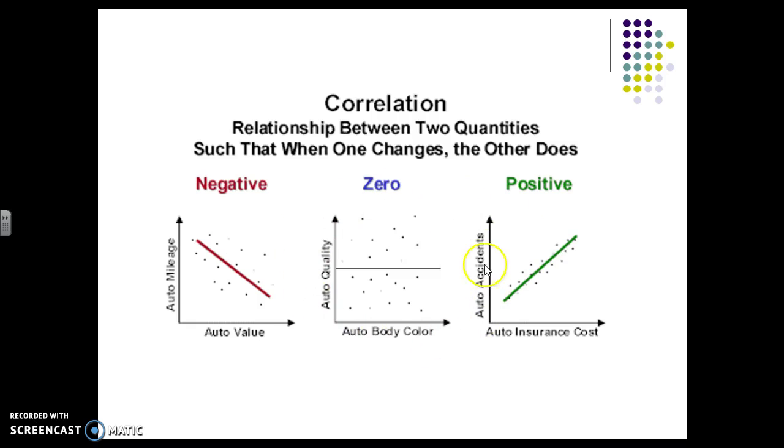We can also have a zero correlation between quality and color. And again, this would be a continuous variable. So we are looking at shades of blue or gray. And here we have everything scattered completely throughout and there is no relationship between the two.